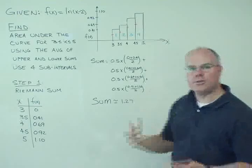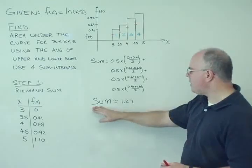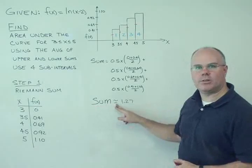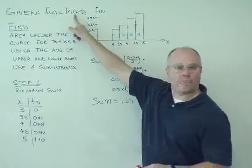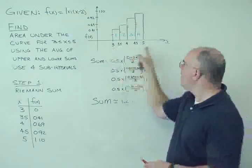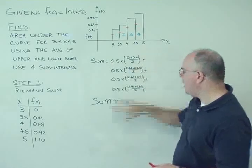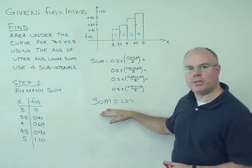I'm going to take the summation of those four terms, and when I do so using a hand calculator, I find that the sum is approximately equal to 1.27. So the area under the curve for this function between x equals 3 and x equals 5 inclusively is approximately equal to 1.27.